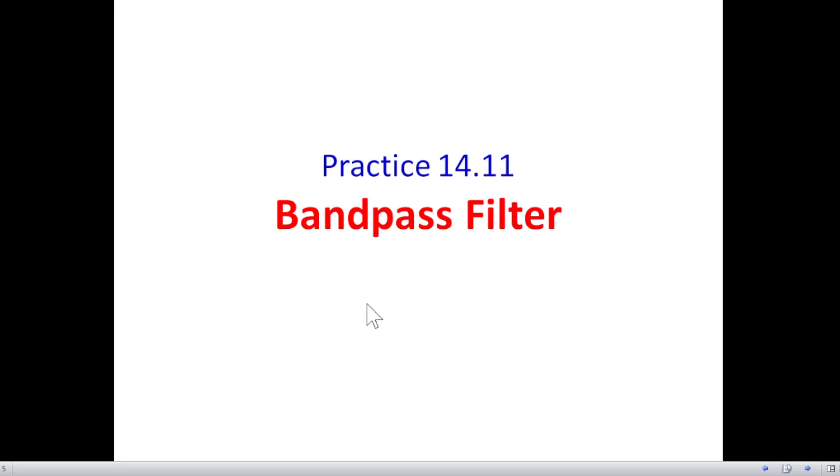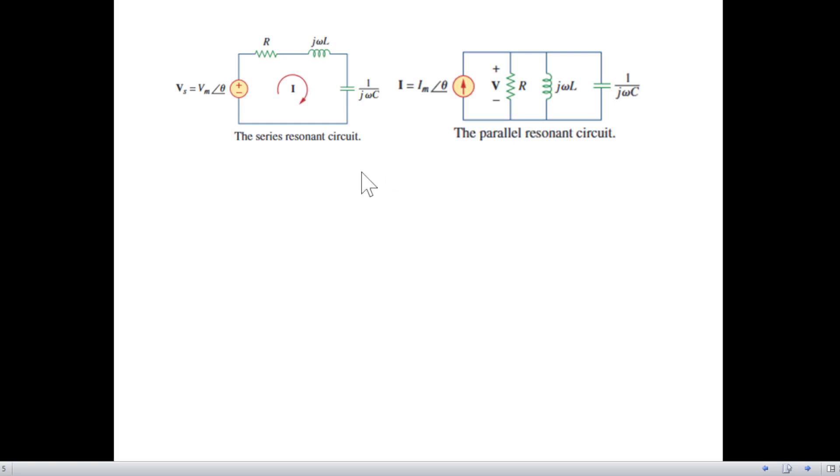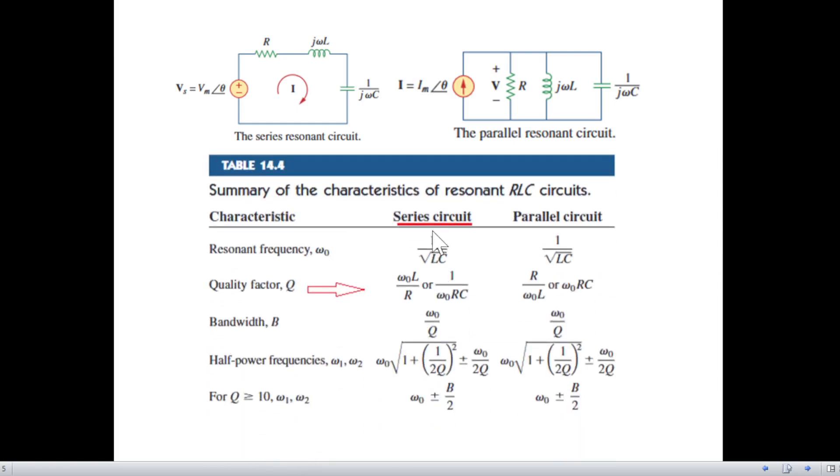Let's start with the two types of resonant circuits or filter circuits. One is the series resonance where all the elements are in series, and this is parallel resonance circuit. The formulas that we'll be using are reproduced here - this is for the series and this is for the parallel circuit. I'll discuss each of them separately but the only thing I want to highlight is the quality factor. This is different for series and parallel, rest everything is the same.